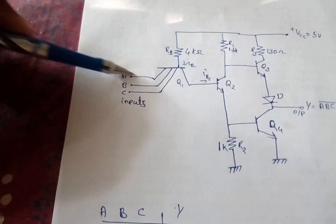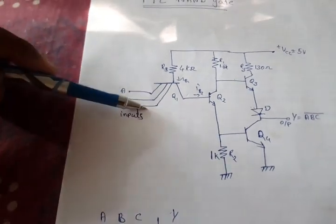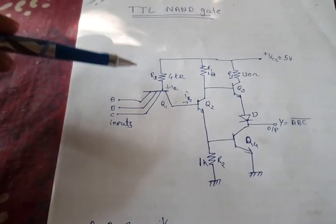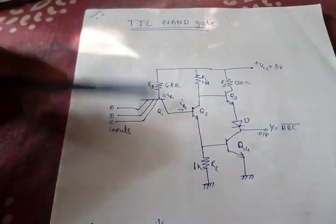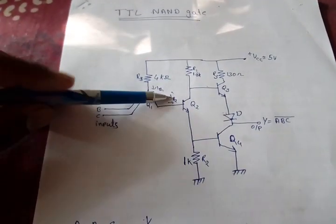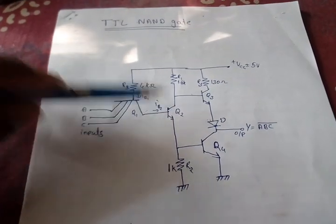Consider that when some or all of the inputs are zero, then the corresponding base-emitter junction will be forward biased. But the collector-base junction will not be forward biased. Thus, the IB2 will be very small. Thus, Q2 will not be switched on.